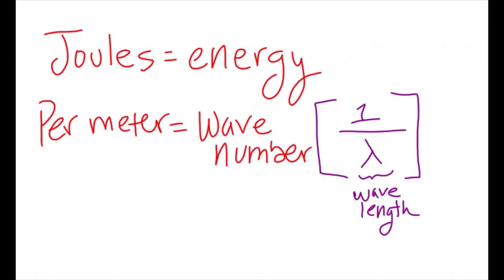Joules represents energy, while the per meter represents wavenumber, or the inverse of wavelength, with wavelength being measured in meters.